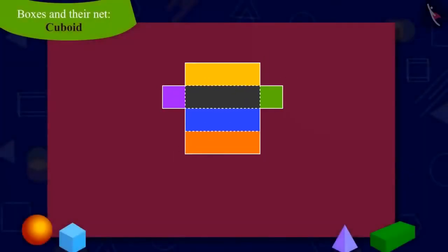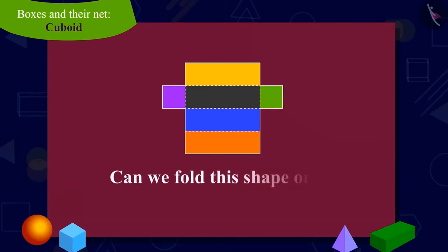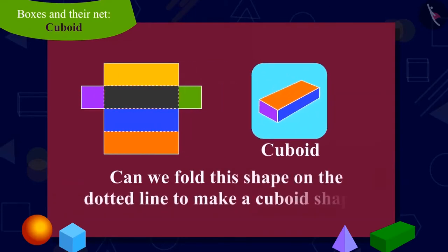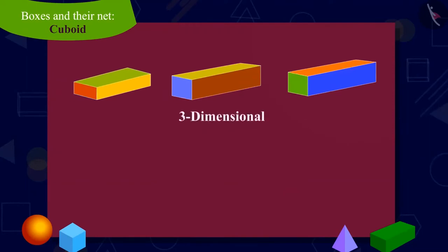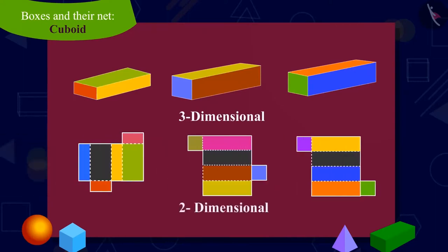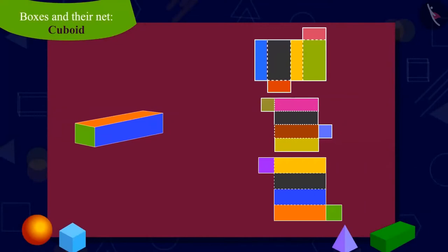Children, look at the shape of this cutout and answer: is this shape also a net of a cuboid? In other words, can we make a box shaped like a cuboid by folding this cutout on the dotted lines? You can find the answer by pausing the video. That's correct! From these cutouts also, we can make a cuboid shaped box. Many two-dimensional nets of any three-dimensional shape, such as cuboids, can be made. We can make any box by folding various types of nets.